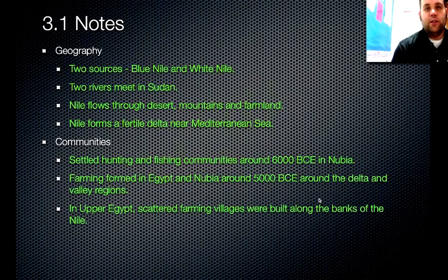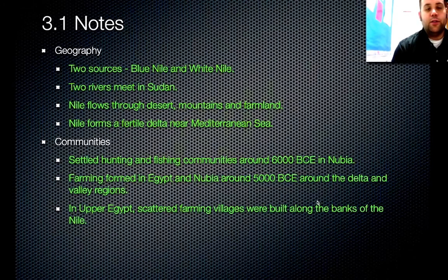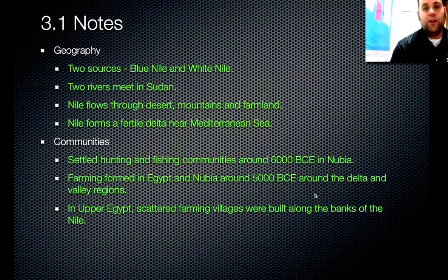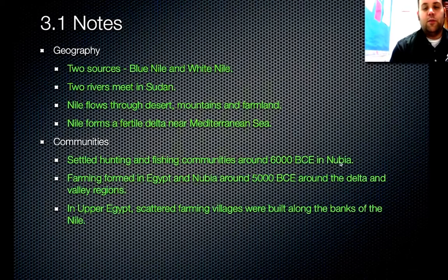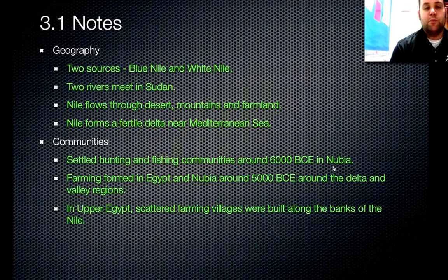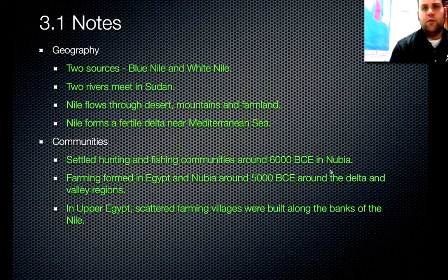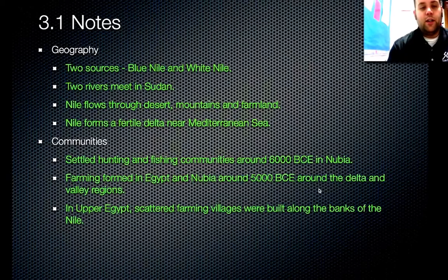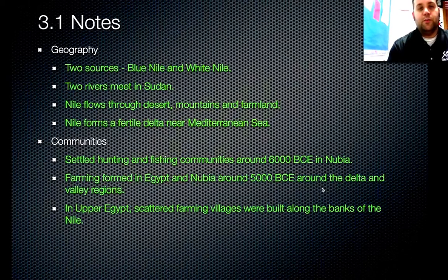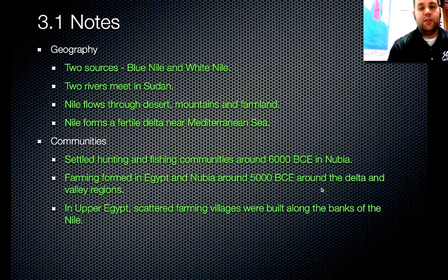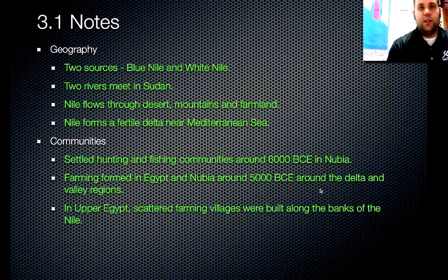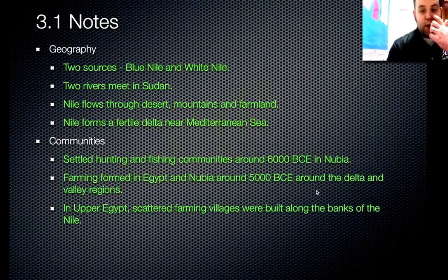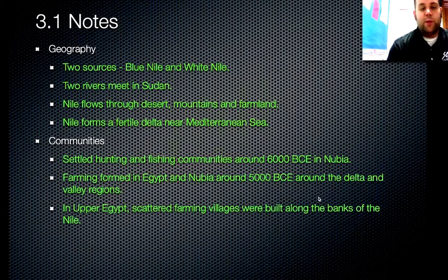The second grouping is communities — the communities that grew up along the Nile. Some of the first communities, around 6,000 BCE — over 8,000 years ago — developed in what we call Nubia, and they were basically hunting and fishing communities. The second point is that farming started in Egypt and Nubia around 5,000 BCE in that delta region where all that rich farm soil is. Upper Egypt had scattered farming villages built along the banks of the Nile.